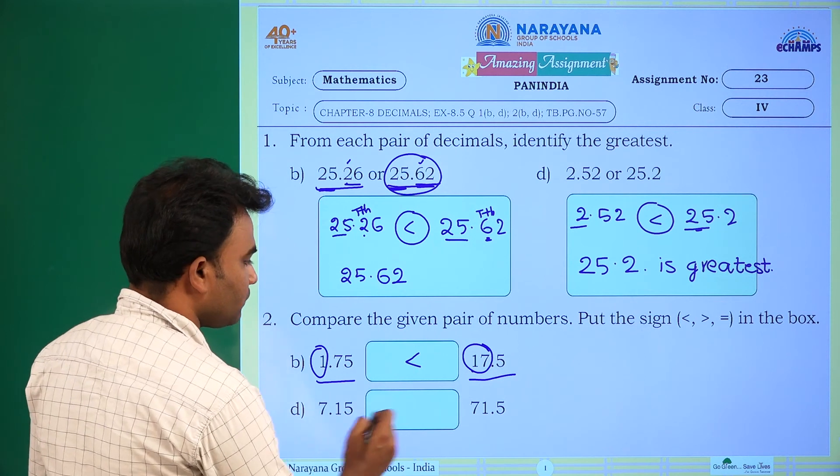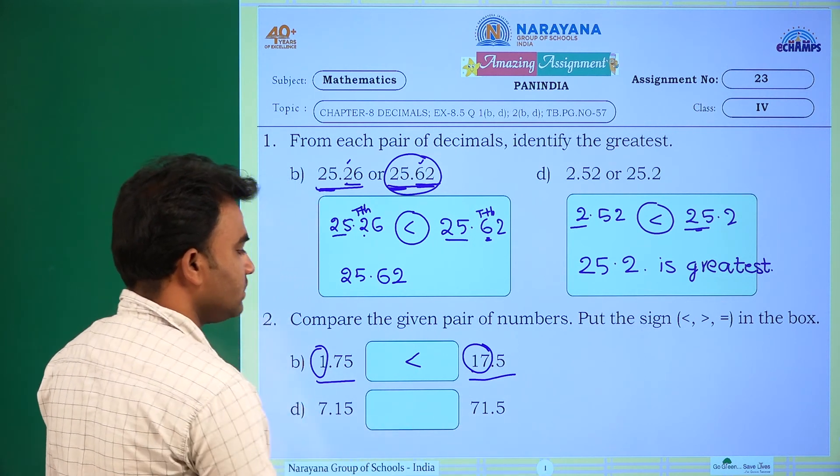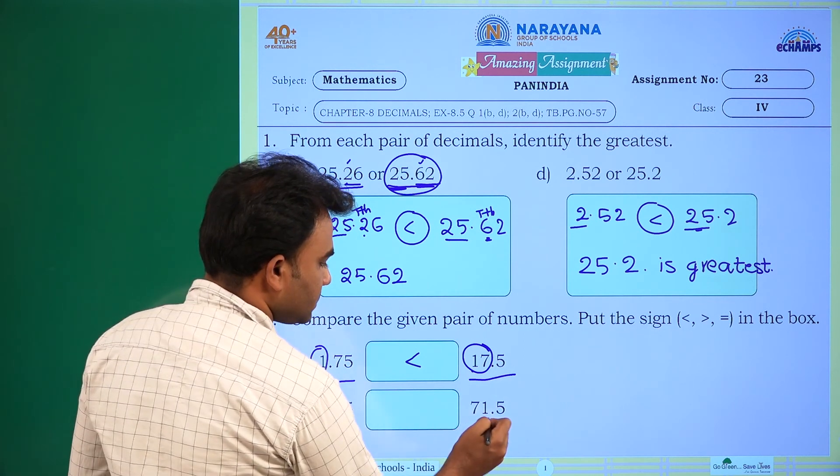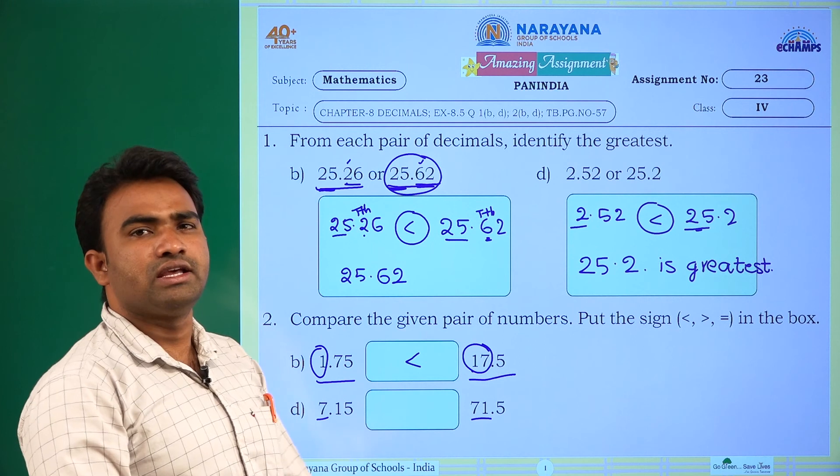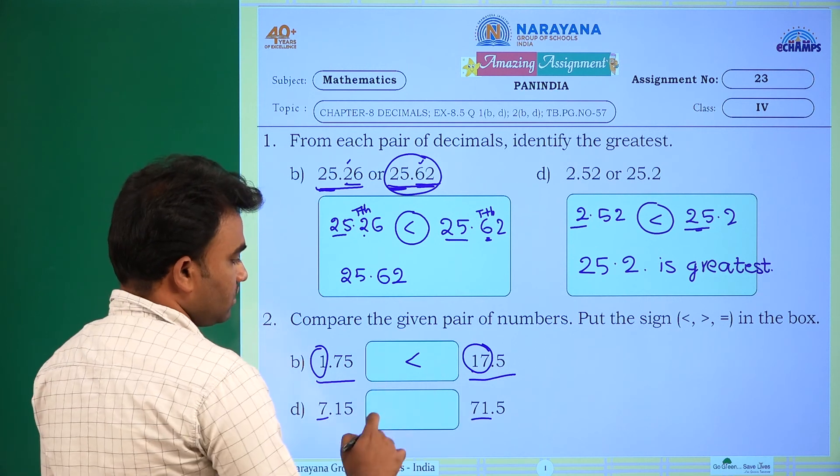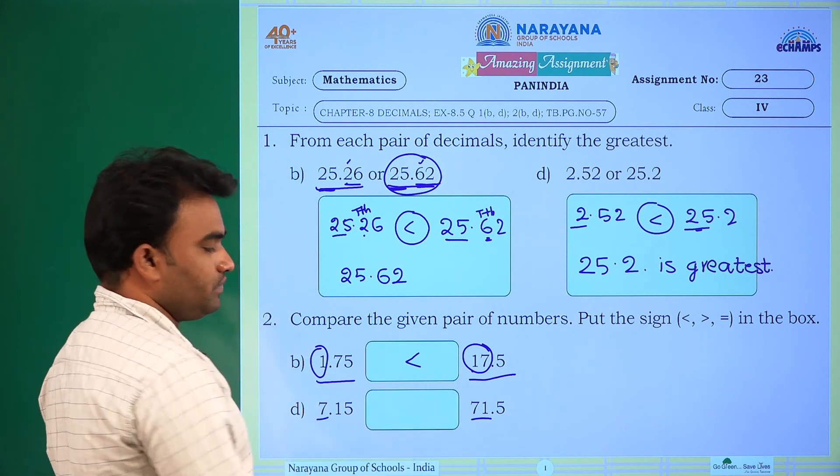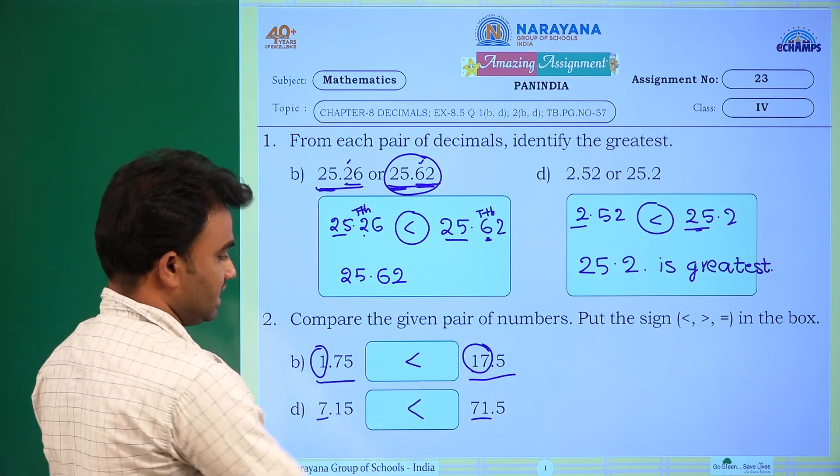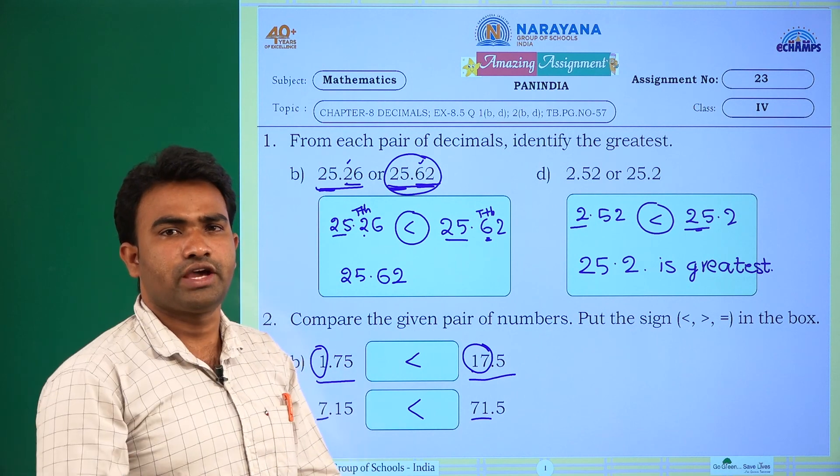Next one 7.15 and 71.5. In these two, 7 is there in whole number part and 71 is there in the whole number part. Among these two, 71 is greater, so less than symbol. This is our assignment for today's children. Thank you.